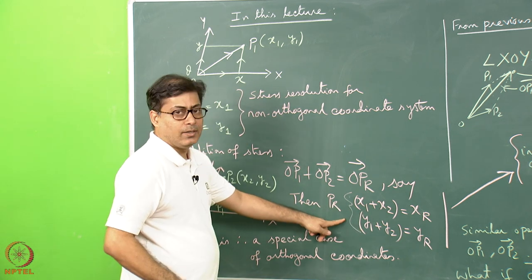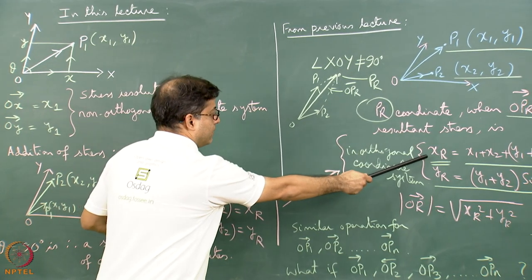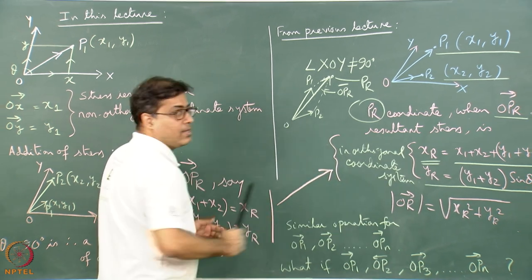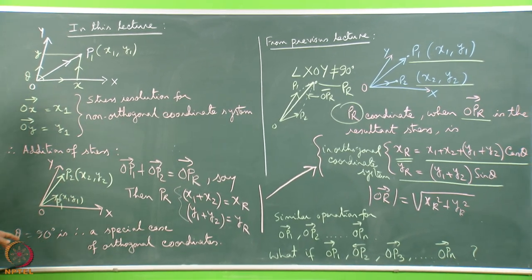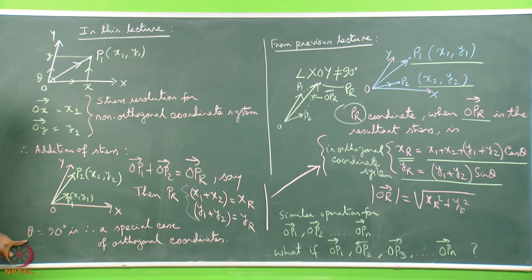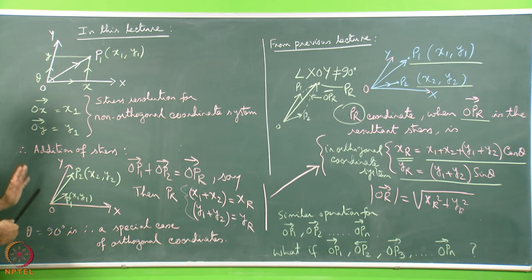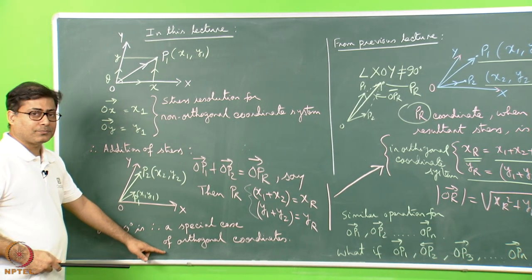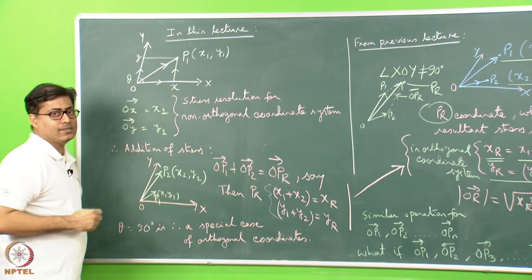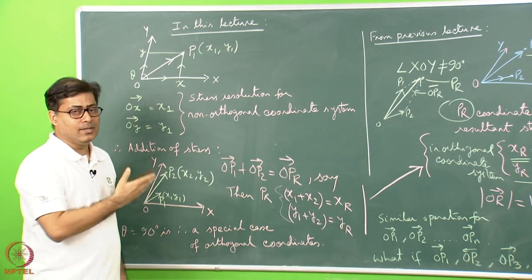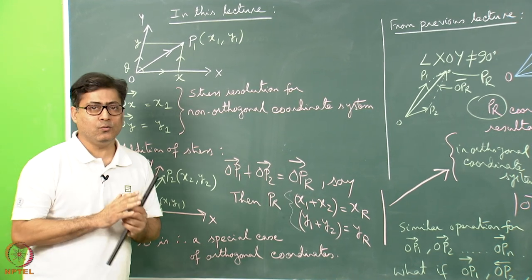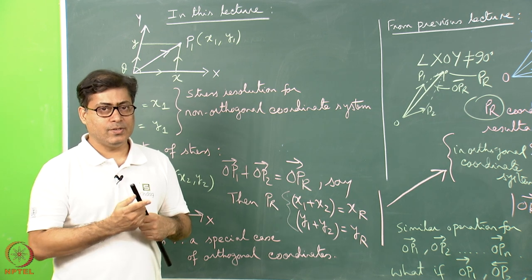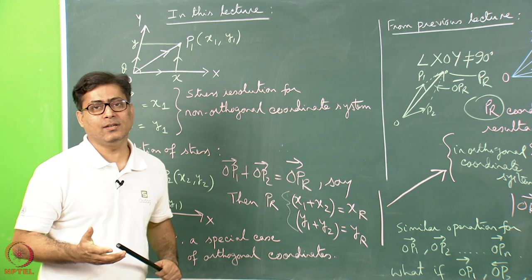This can be compared and converted into an orthogonal coordinate system. When theta equals 90 degrees — the special case — the non-orthogonal coordinate system becomes orthogonal, and the method of adding stresses and vectors remains the same. This was for a two-dimensional plane with OX and OY axes not at 90 degrees.